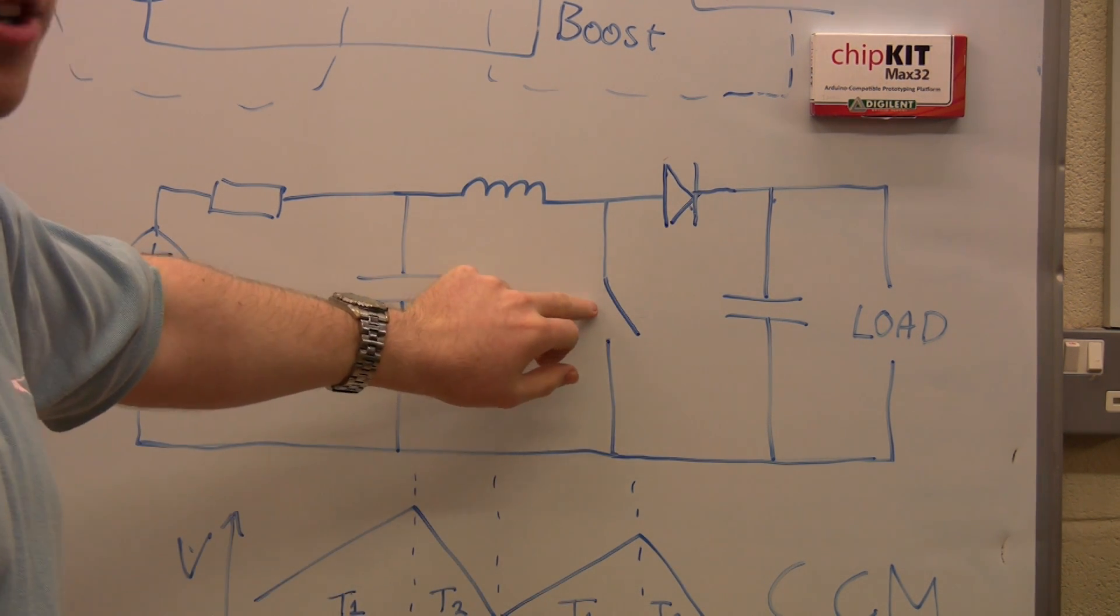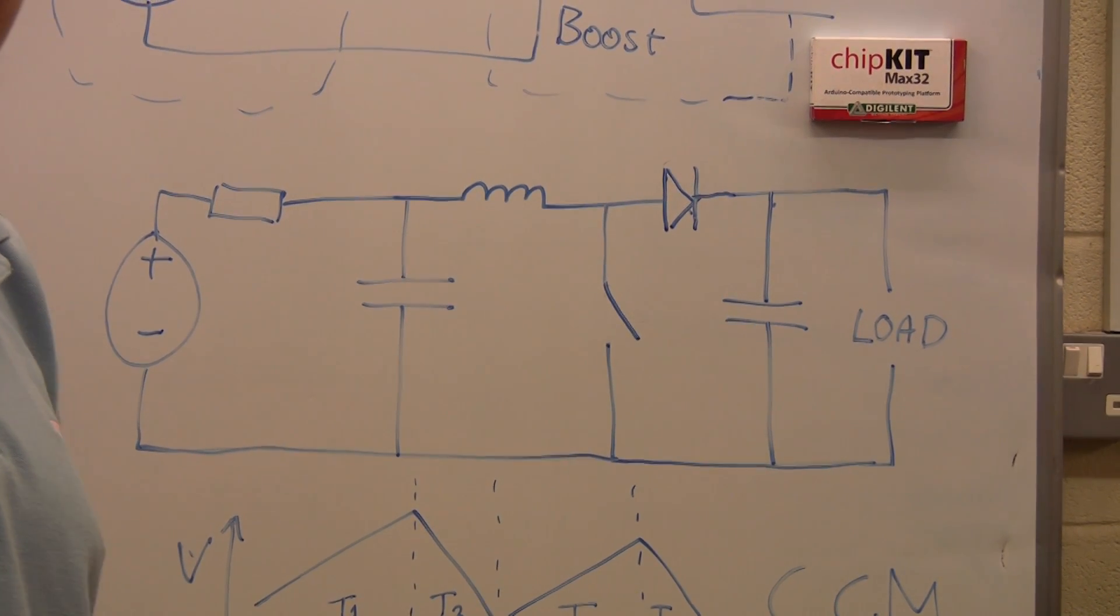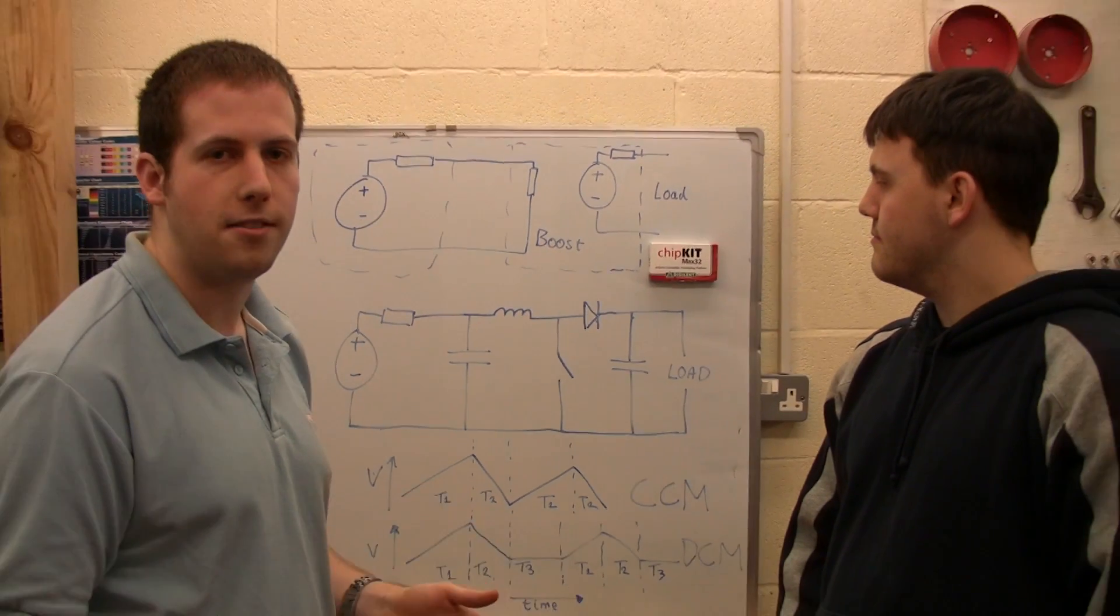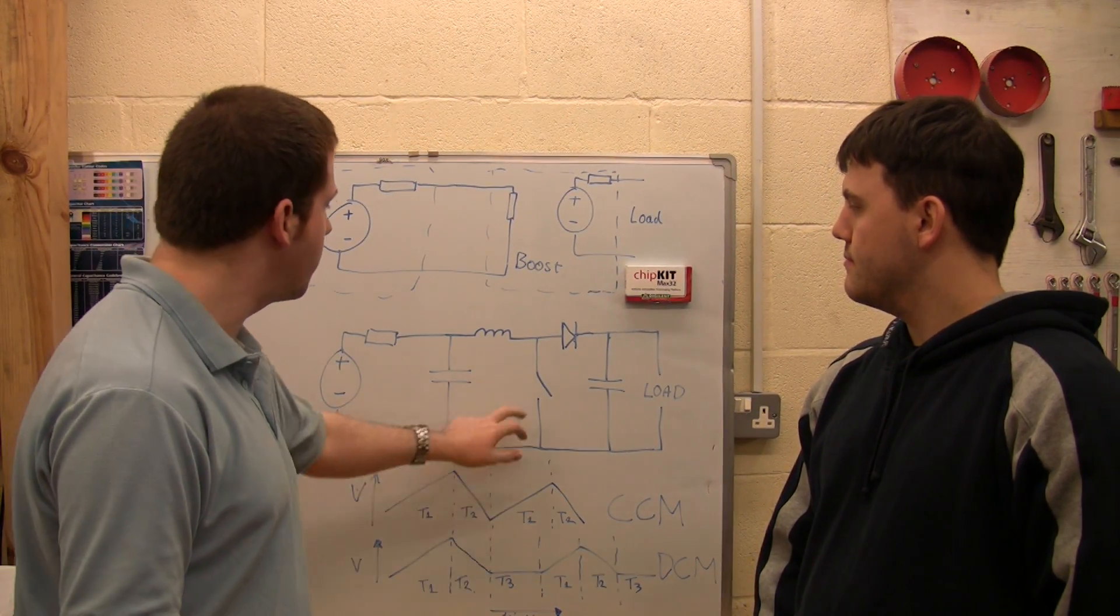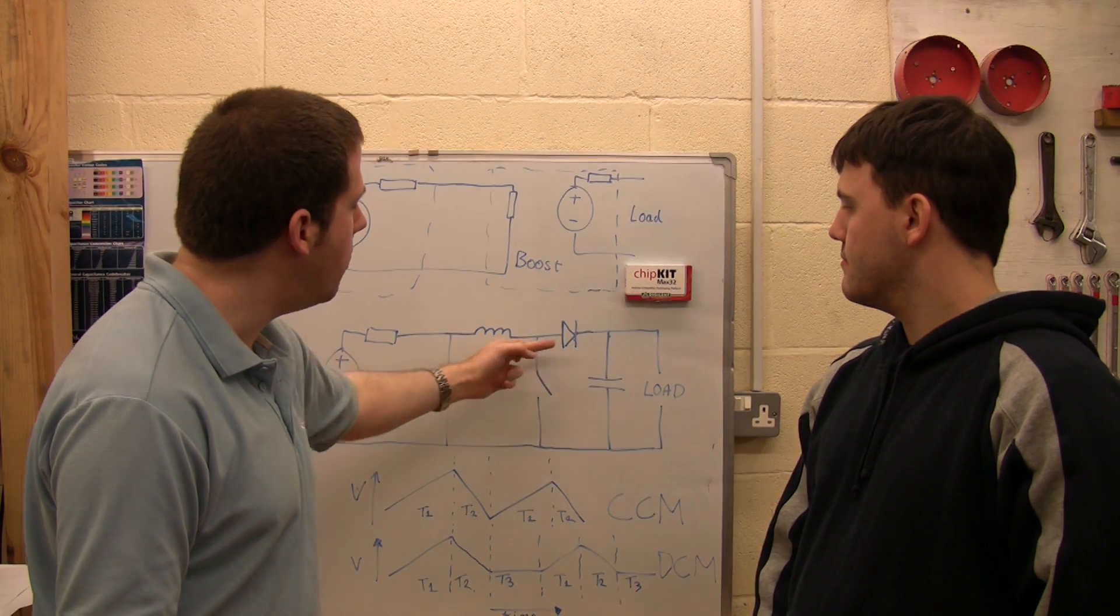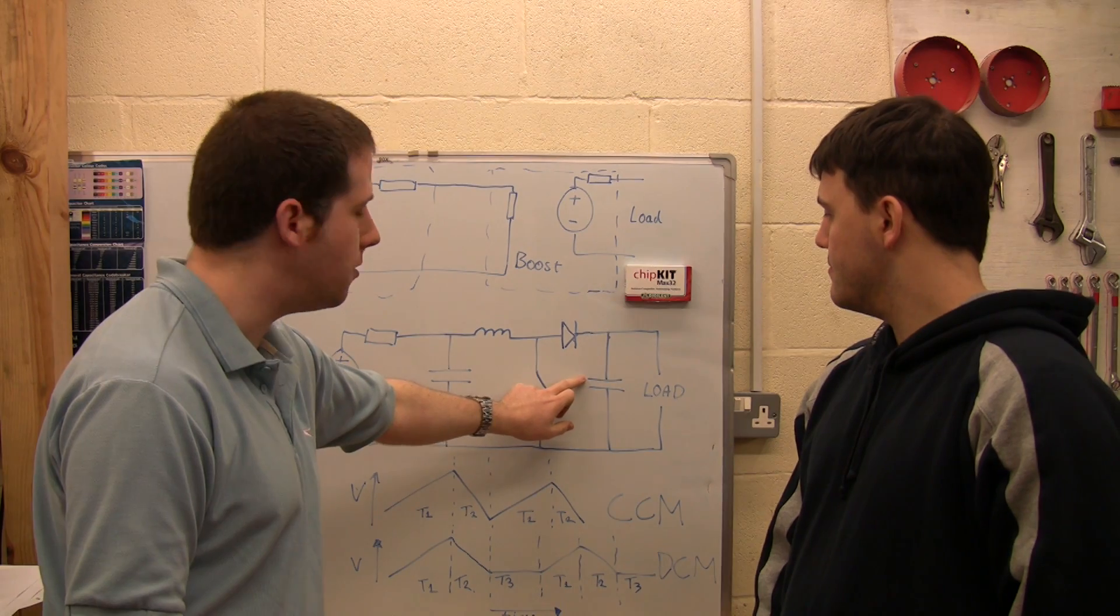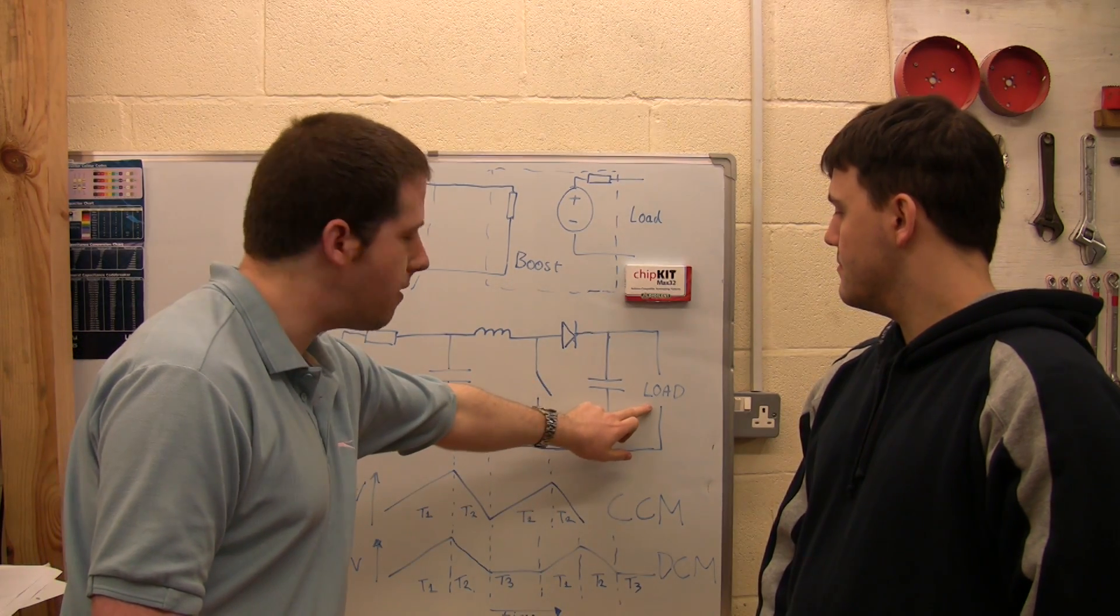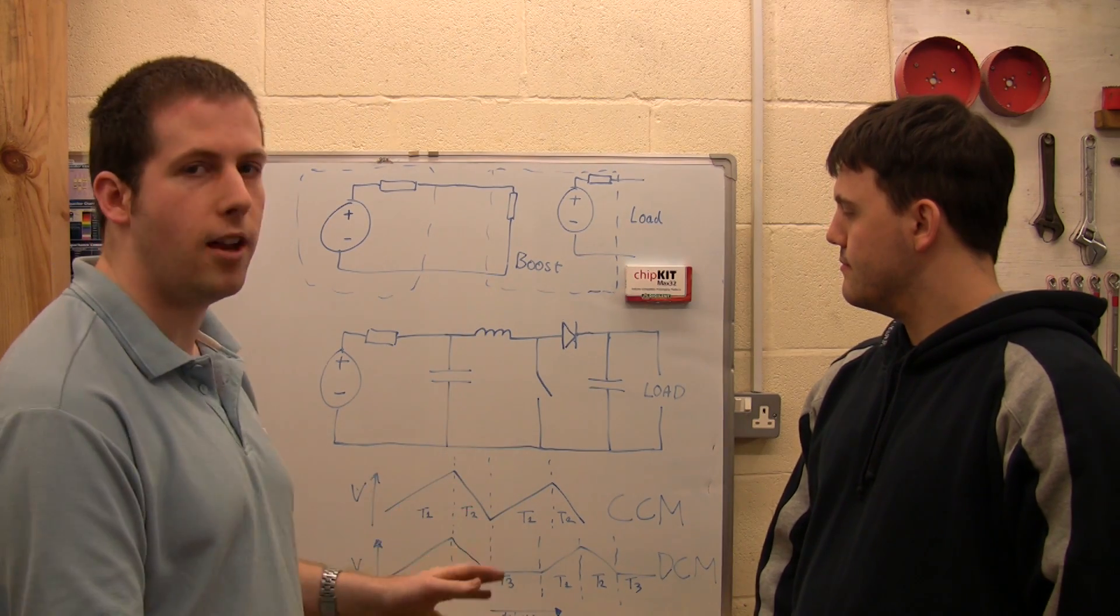Down here we've got a switch - in the actual circuit we use a FET. Generally you'll use either a BJT or a FET, any kind of transistor. IGBTs are very popular. We've got the diode here, so it only conducts in one direction. Then we've got another capacitor which filters our output, directly across our load.